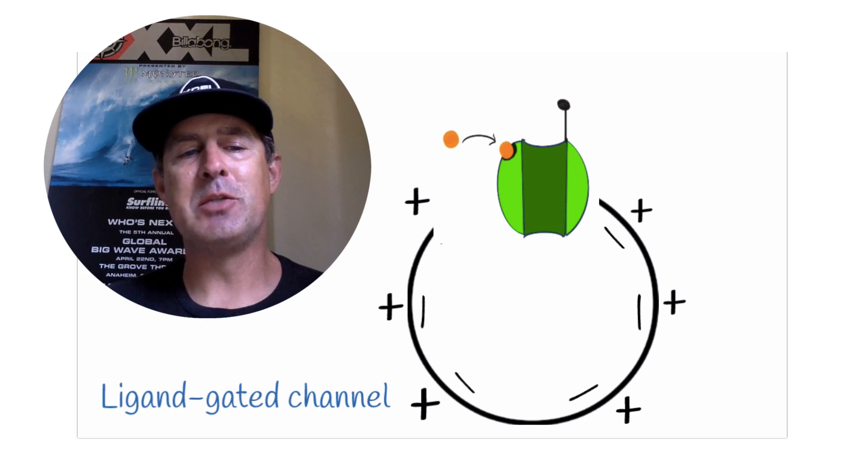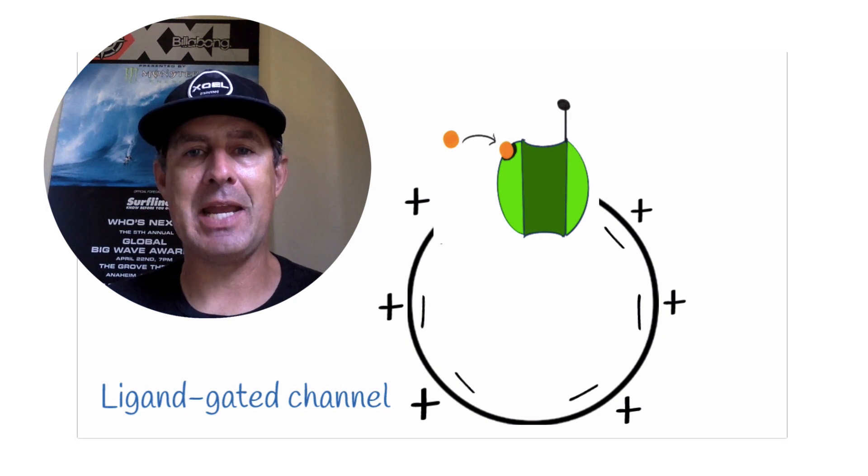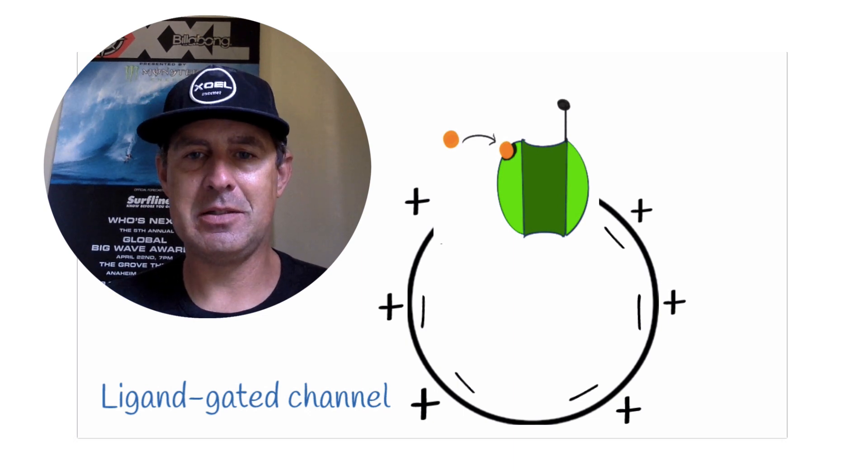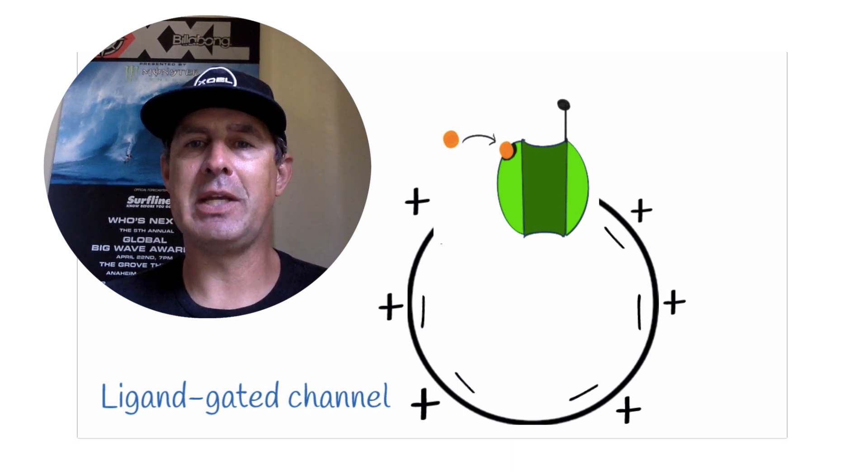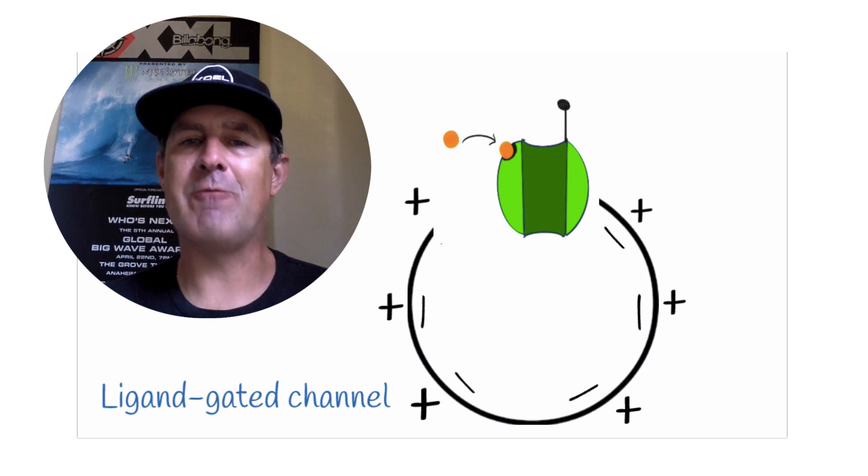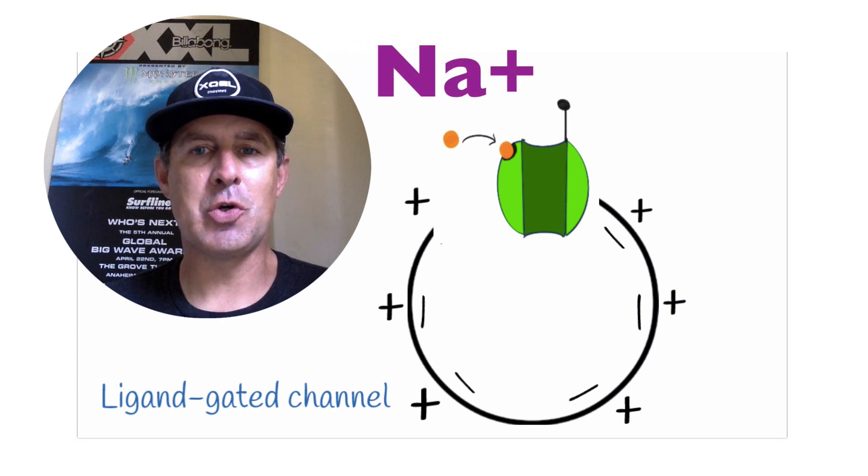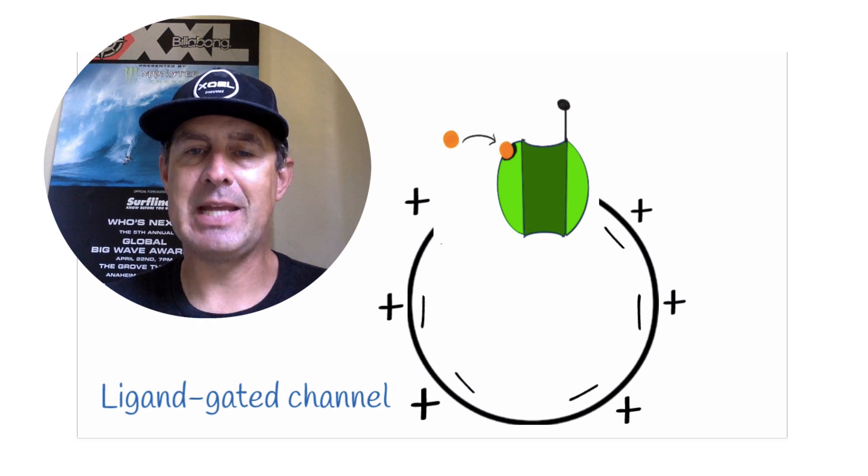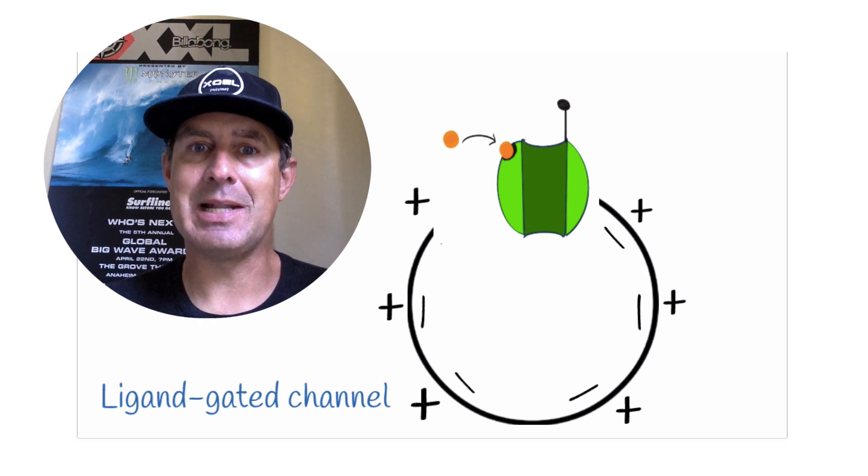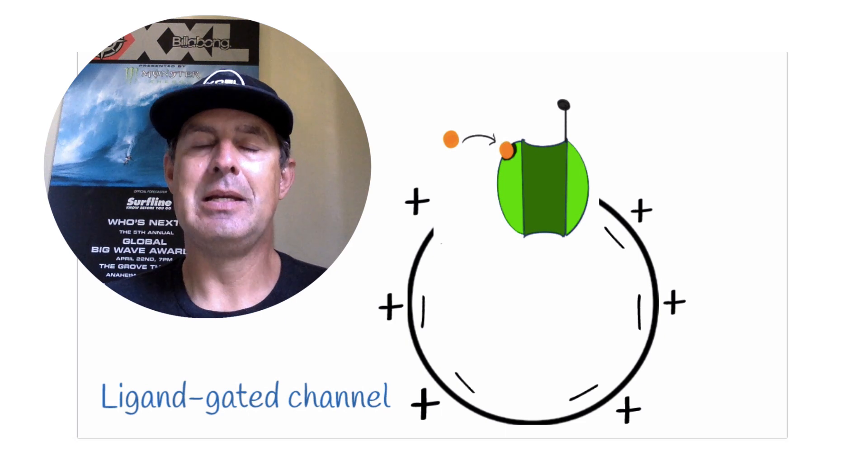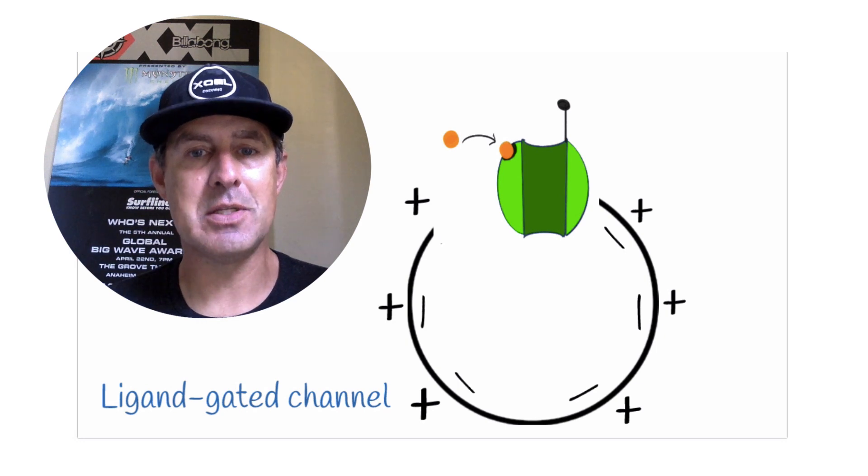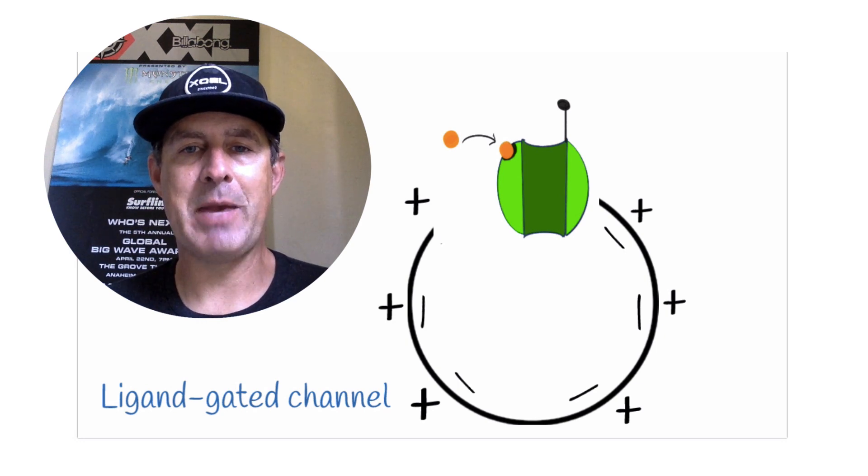So for example, this might be called a sodium ligand-gated channel. So sodium would move into the cell only if the gate were open, but that gate only opens if the ligand binds to it. For example, we have acetylcholine that opens up sodium-gated channels. Acetylcholine would be the ligand, and sodium is the ion that actually passes through the channel. So it's really important that the ligand doesn't pass through the channel.